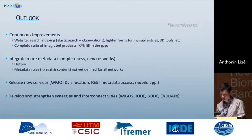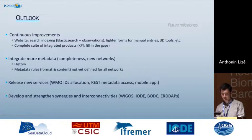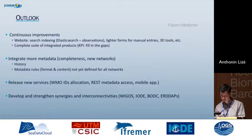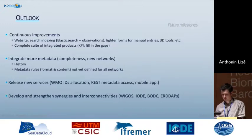We also want to complete the set of integrated products — as seen on the previous slide, there are gaps in the KPIs and some maps are missing because we don't have enough metadata yet to produce them. This brings me to my second point: we still need to integrate more metadata. Besides completing current networks and adding new ones, we need to work on historical metadata — for example, for DBCP it's quite hard because they have been reusing WMO IDs. We also need to complete the full set of deployments for moorings. Not every network has yet defined its metadata rules in terms of format and content, but that is on the way.